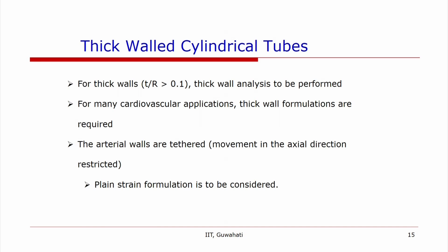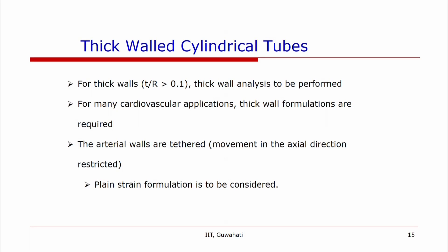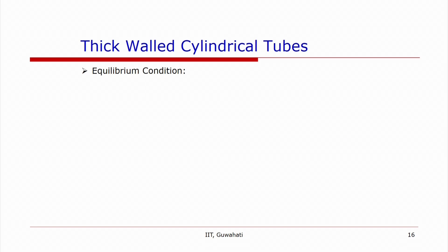The thin-wall assumption is good when the ratio of thickness to channel radius is less than about 0.1. However, for thicker walls a thick-wall analysis must be performed, taking into account the stress variation through the wall. For many cardiovascular applications this may be the case. Since arterial walls are tethered — their movement in the axial direction is restricted — only a plane strain formulation in the r and theta directions needs to be considered.